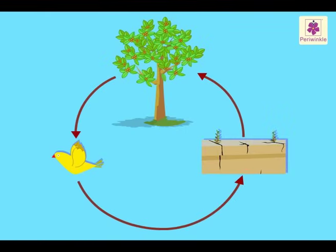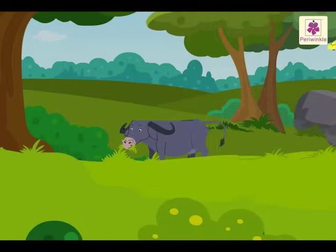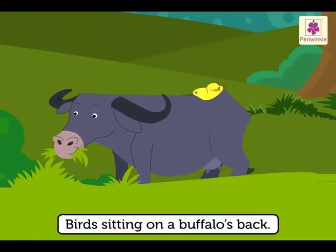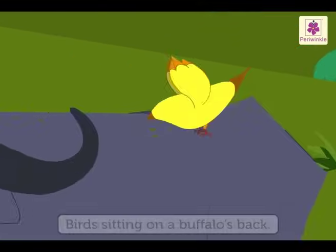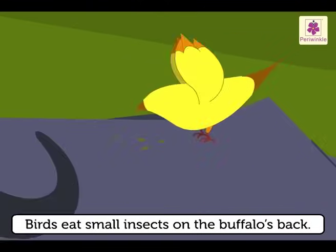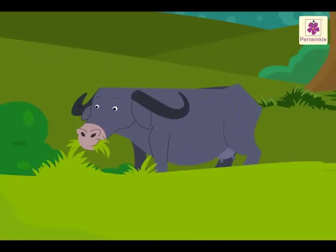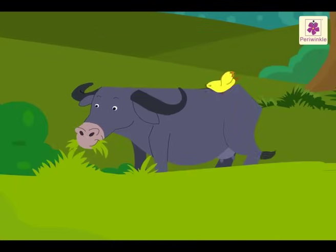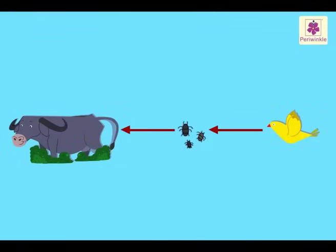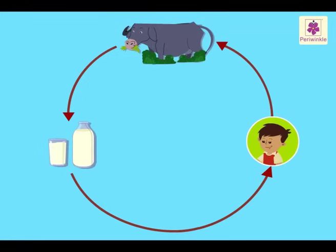Here, the trees give food to the birds, and the birds in turn help new trees to grow. In nature, you will find perfect cooperation between living things. Sometimes we see birds sitting on a buffalo's back — they eat the small insects on the buffalo's body. The birds get food, and the buffalo is rid of the insects.